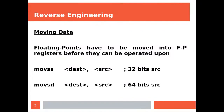Moving data. Floating points have to be moved into the floating point registers before they can be operated upon. If you're dealing with single precision, you will be using MOVSS. And if you're using double precision, you're going to be using MOVSD. As usual, source into destination.